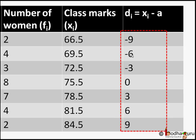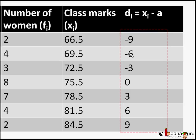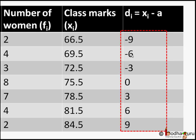The values have become very small: −9, −6, −3, and so on. If we had taken class marks directly, you would have to compute 66.5 × 2, 69.5 × 4, and so on. Now the values are very small, saving significant calculation effort.